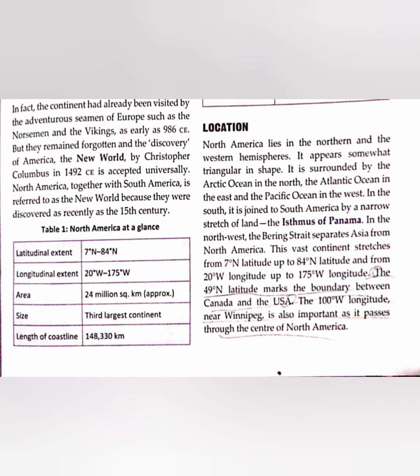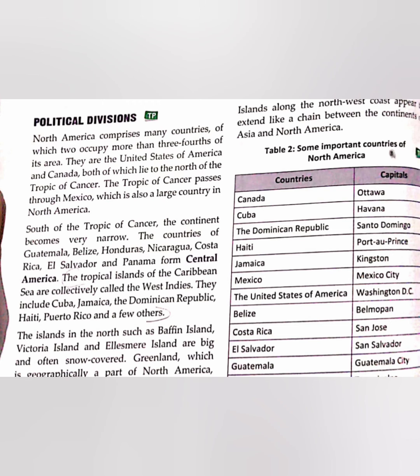The 100° West longitude is very important because it passes through the center of North America. North America comprises many countries, including the United States of America, Canada, and Mexico. The Tropic of Cancer passes through Mexico, which is also a very large country in North America.